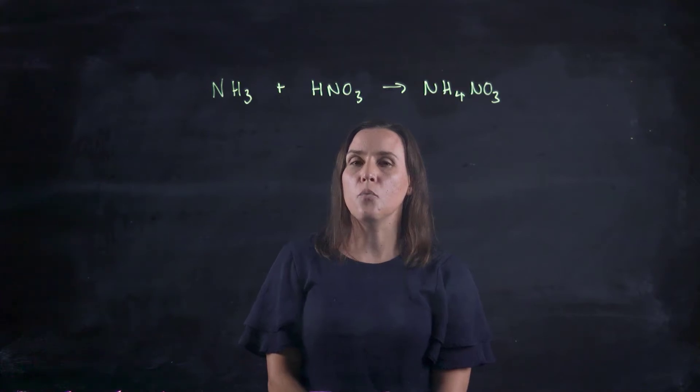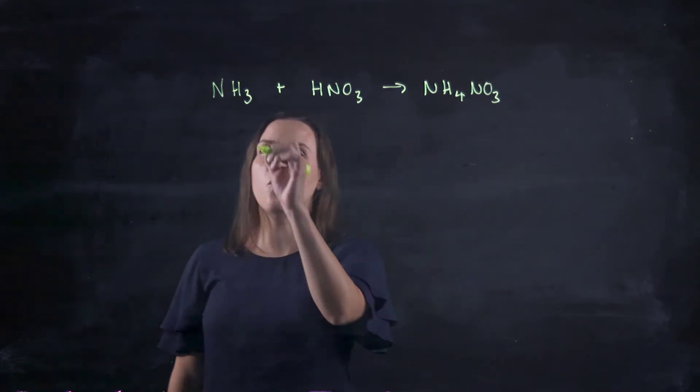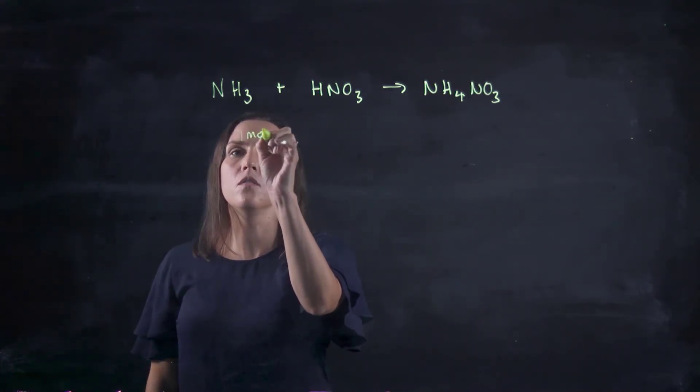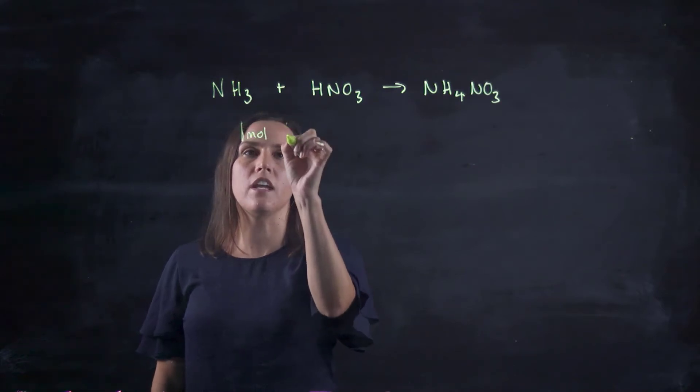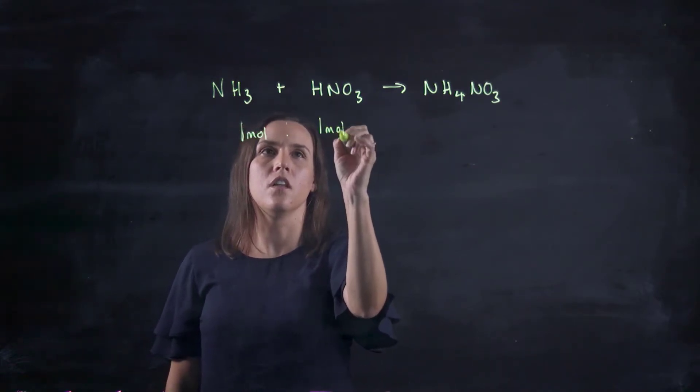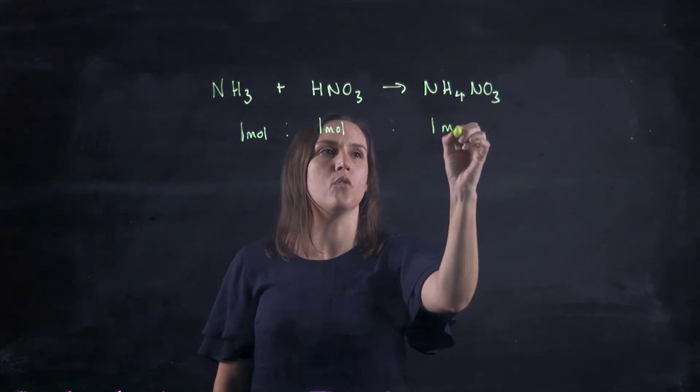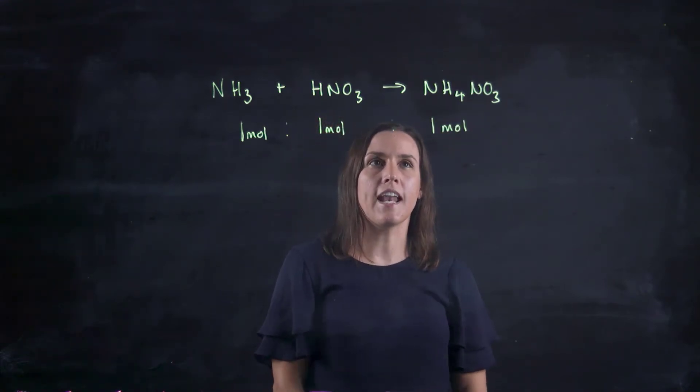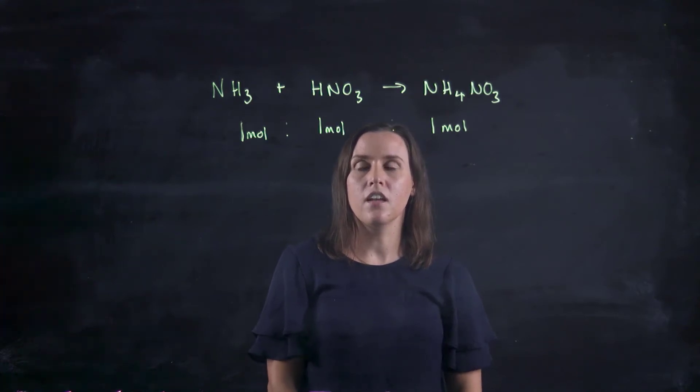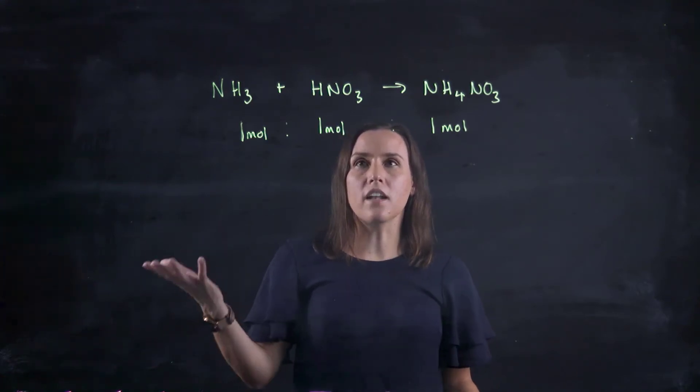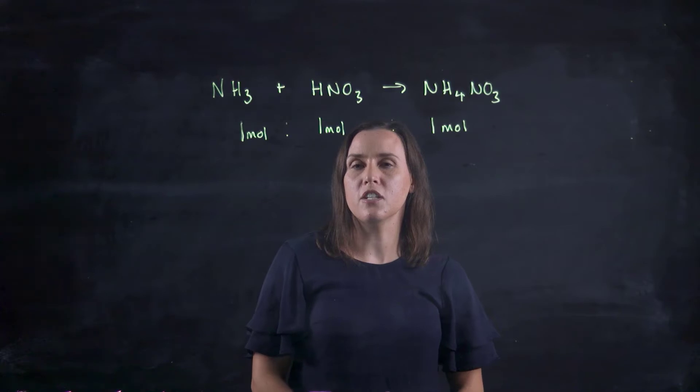Now, this reaction is telling me that one mole of NH3 and one mole of HNO3 produces one mole of the product NH4NO3. That's a one to one to one relationship.